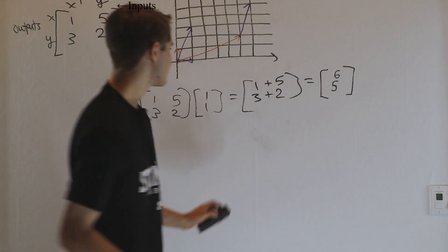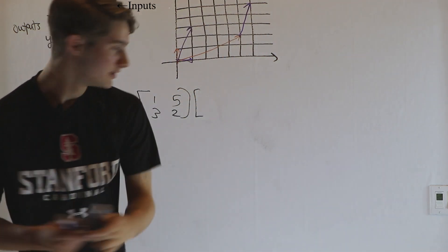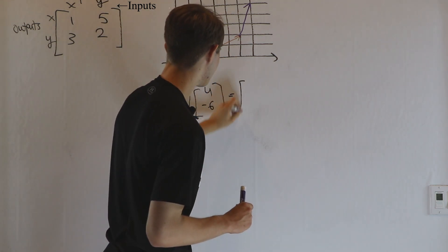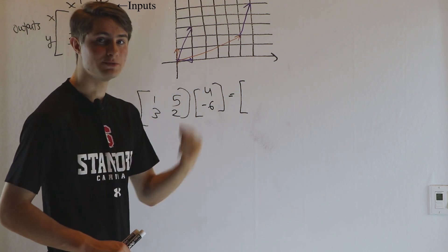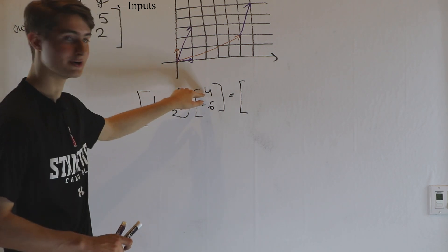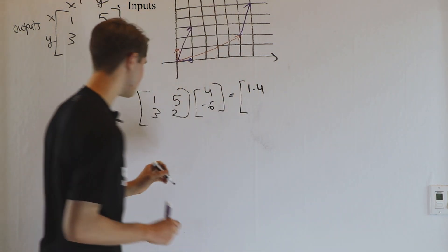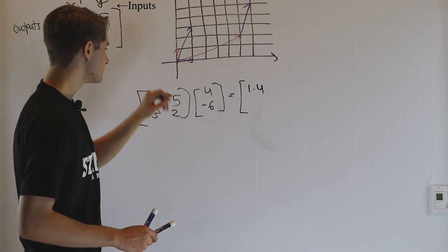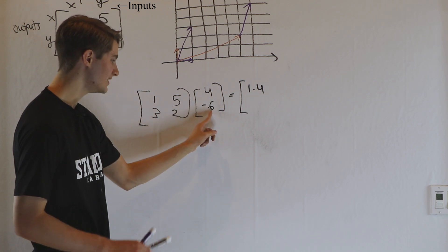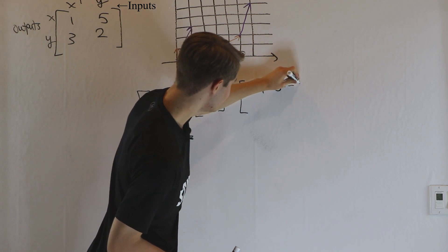So we've been looking at some basic vector inputs so far, but what if we get something a little more complicated? Say instead of [1, 1], we want to look at multiplying this matrix by [4, -6]. Well, we know that for every x input of one, we get an x output of one. So our x output is going to be four — we get that by doing one times four. Now for the y input, for every y input of one we get an x output of five. So if our y input is -6, our x output is five times negative six.